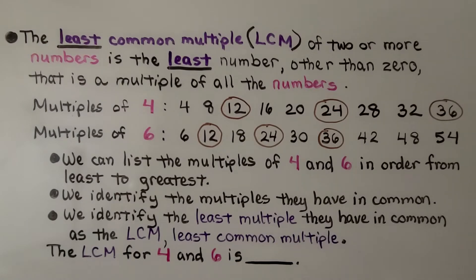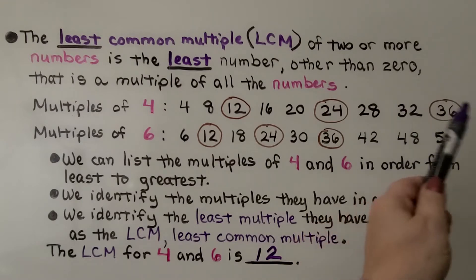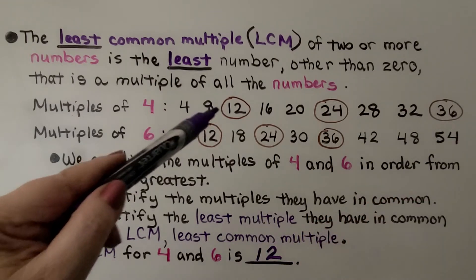So the least common multiple, the LCM for 4 and 6 is 12. And we can find other common multiples if we made the list longer, but the least one is 12.